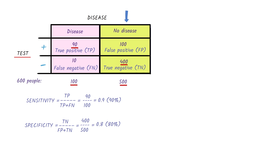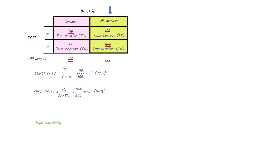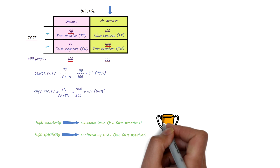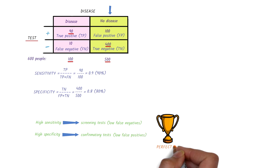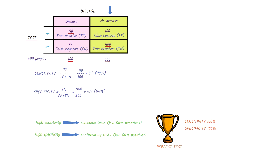And that's how sensitivity and specificity are calculated. Tests with high sensitivity are good for screening tests because the proportion of false negatives is low. On the other hand, tests with high specificity are good for confirmatory tests because the proportion of false positives is low. The perfect test will have a sensitivity of 100% and a specificity of 100%. The closer a test's sensitivity and specificity are to 100%, the better the test is at confirming or excluding the disease.